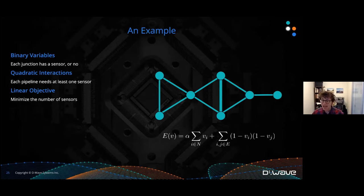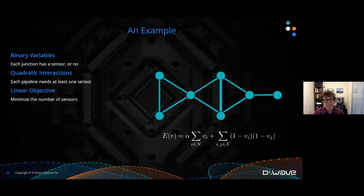Linking back to the pipeline example: we have binary variables — each junction either has a sensor or not. We have quadratic interactions — each pipeline touching two junctions needs at least one sensor. And we have a linear objective — minimize the total number of sensors. You can see on the bottom right how we encode this as a binary quadratic model and solve it on our quantum computer.